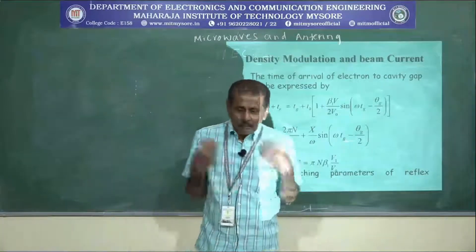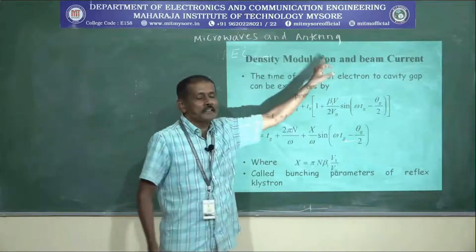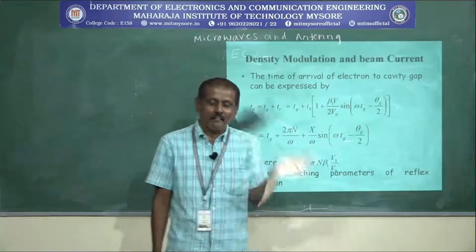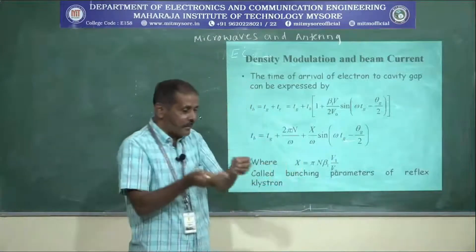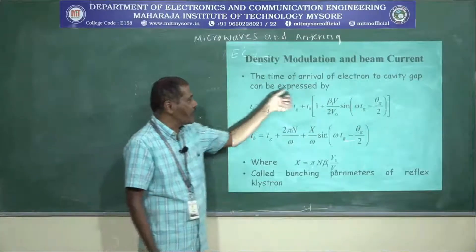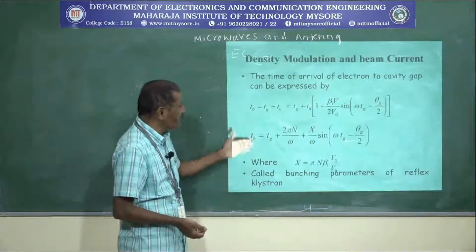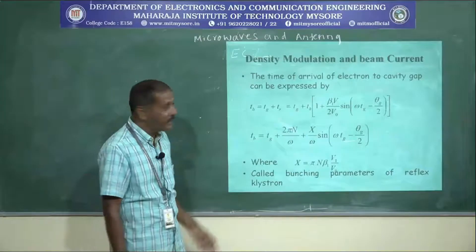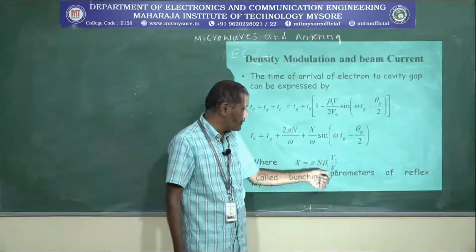After velocity modulation, the electrons are bunched together, and these bunched electrons move toward the repeller space — this is called density modulation. Remember: velocity modulation occurs in the grid space, whereas density modulation occurs between the grid space and the repeller space. The time for the bunched electrons to arrive back at the cavity gap is calculated as Tb, either from Tb = T × [related equation] using the parameter X = π × n × β1 × V1/B, where β1 is the coupling coefficient.